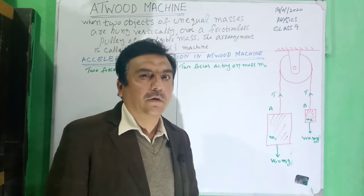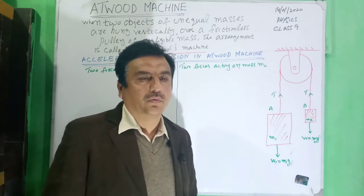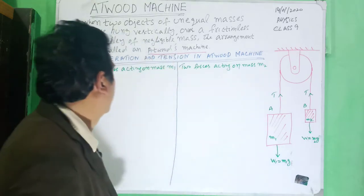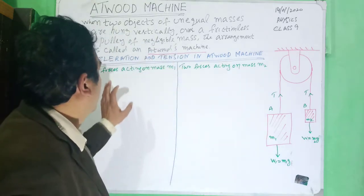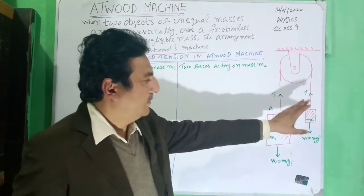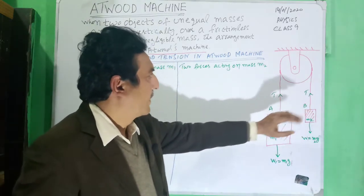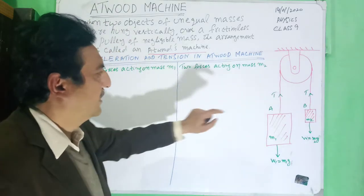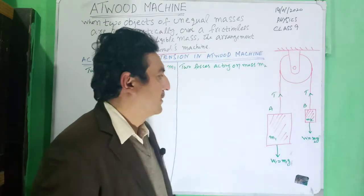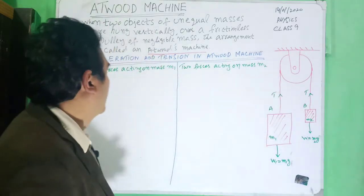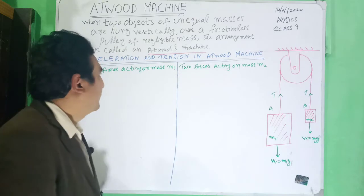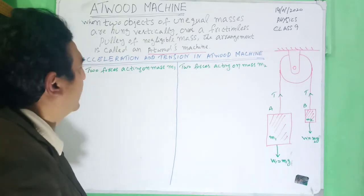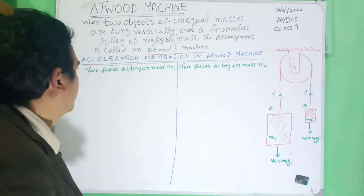Here we find two things. One is the acceleration of this system, and the other is tension. So first we find acceleration and then we will find the tension.